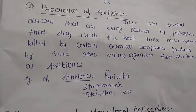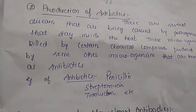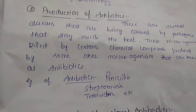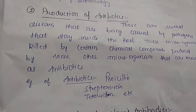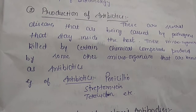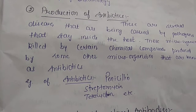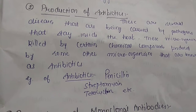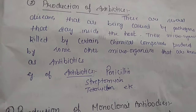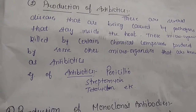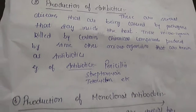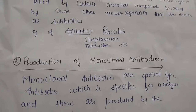Examples of antibiotics: Alexander Fleming discovered penicillin in 1928. Other examples include streptomycin, tetracycline, etc.